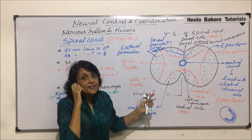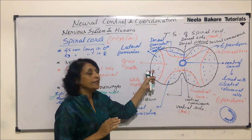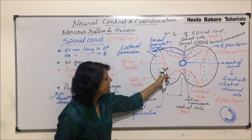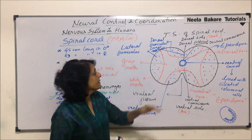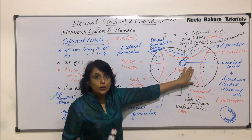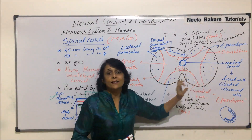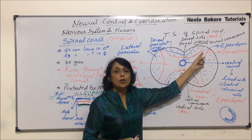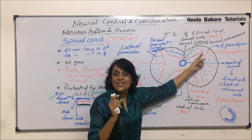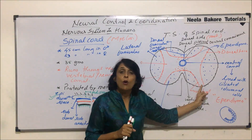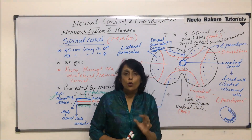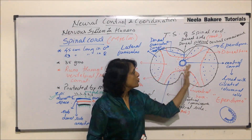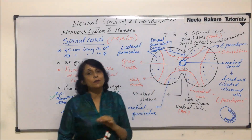The outer part is white matter and the inner part is gray matter in the shape of the H alphabet. The gray matter contains mainly cell bodies of neurons, while the white matter has only myelinated nerve fibers. The dorsal horn mainly has sensory fibers and the ventral horn mainly has motor fibers. Normally in the middle region are the bipolar neurons, which we will draw when we come to reflex action.